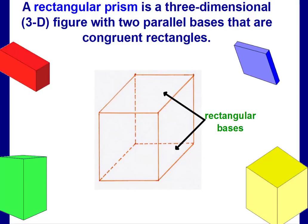A rectangular prism is a three-dimensional 3D figure with two parallel bases that are congruent rectangles. So here's a three-dimensional figure. If you look at the bases, kind of like the floor and the ceiling, the bottom base is in the shape of a rectangle, the top base is also in the shape of a rectangle, these are congruent. That means their dimensions are the same.